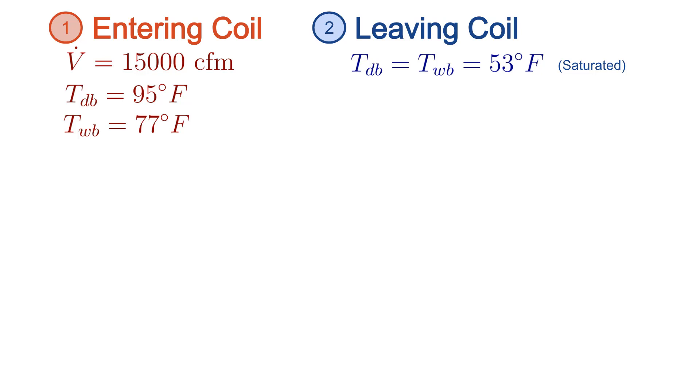Since both states are fully defined, we can use the psychrometric chart or a psychrometric calculator to look up any other parameters for each state. I use the psychrometric calculator from Dayton ASHRAE, which I highly recommend. But in a test environment, you may want to use the psychrometric chart, since that's all you'll have in the exam.